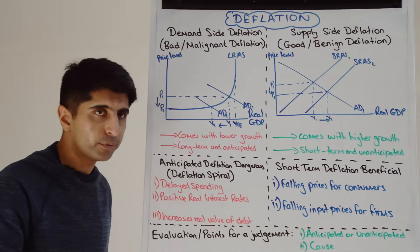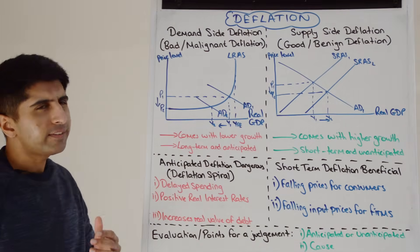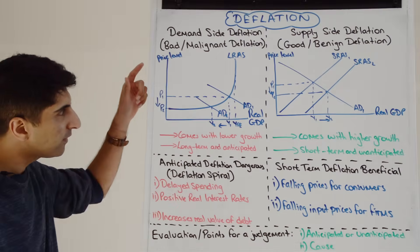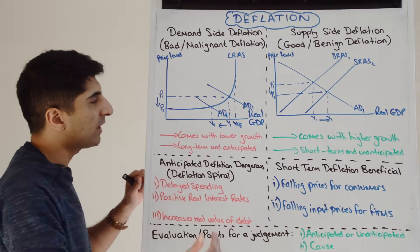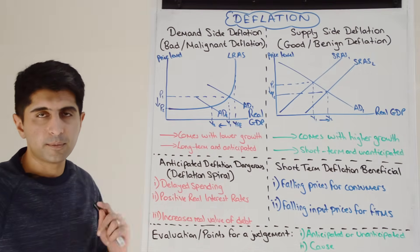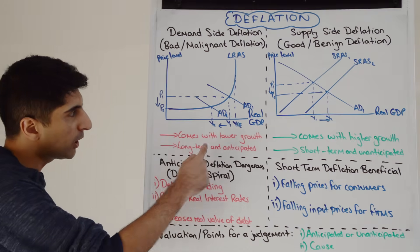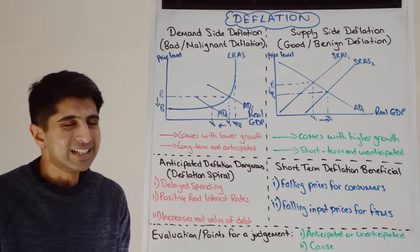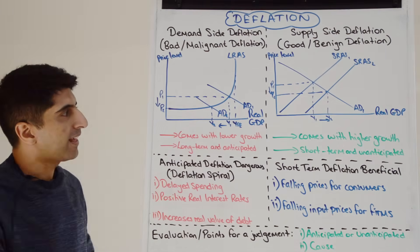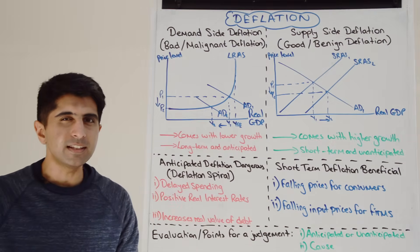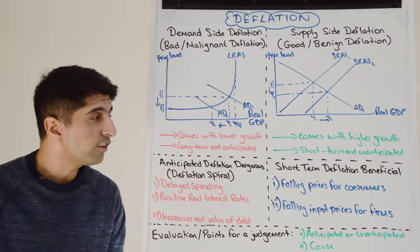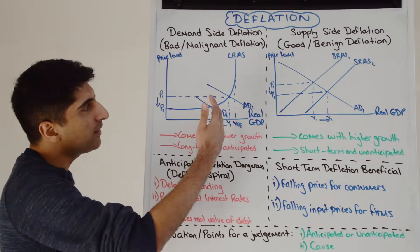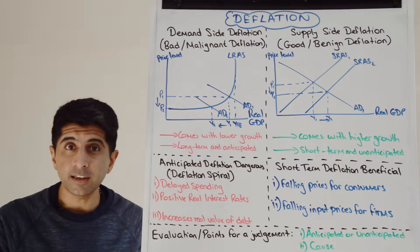Why do we say demand-side deflation is bad deflation? From the diagram, when AD shifts left there's a reduction in the price level from P1 to P2 — that's our deflation — but it also comes with lower economic growth. The major issue is that we assume demand-side deflation could be long-term and anticipated. Why? Because if AD shifts left and a recession is caused in the economy...